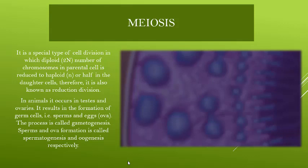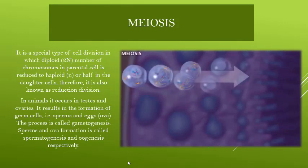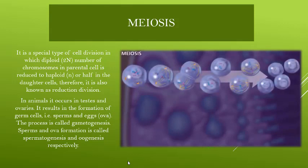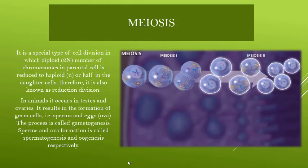The reason is that when the daughter cells are formed, the chromosome number is half. Otherwise, if fertilization occurs and the chromosome number is the same as the parent cell, after fertilization the number of chromosomes will be doubled in each generation. That is why meiosis occurs during gametogenesis, so that the number of chromosomes will be half in the daughter cells.